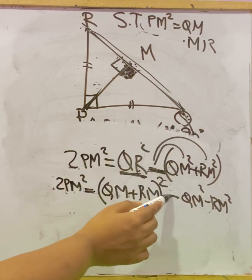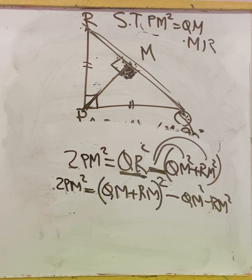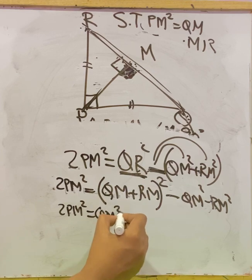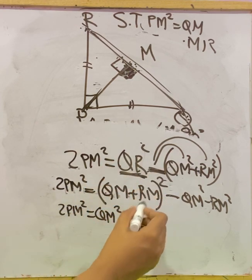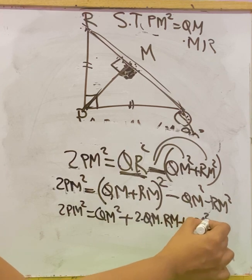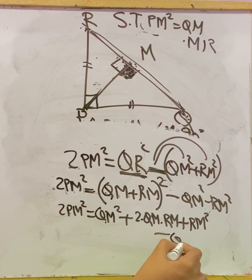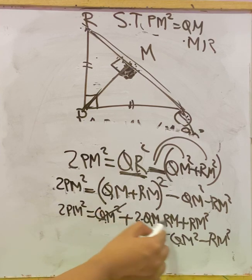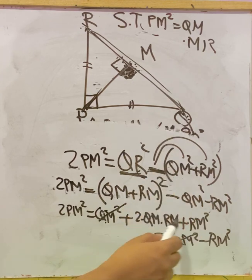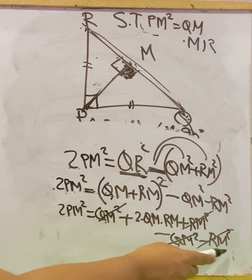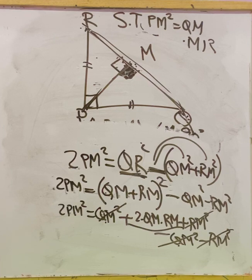Using the identity (a + b)² = a² + 2ab + b², we expand: 2PM² = QM² + 2·QM·RM + RM² − QM² − RM². Now QM² and −QM² cancel by additive identity (result = 0), and RM² and −RM² also cancel. The balance is 2·QM·RM.